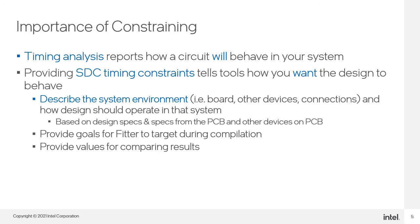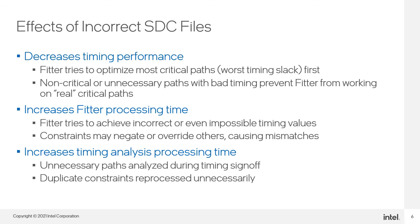Constraining your design tells the software tools your desired timing goals so that the fitter and timing analyzer can properly report back if your design can operate within the timing requirements. If your SDC file is not exactly right, or some constraints are off or missing, these incorrect or missing constraints can cause the fitter to make incorrect optimization choices and potentially spend too much time trying to reach timing closure in areas where timing is more restrictive than necessary. When the fitter works unnecessarily hard, other areas of the design will suffer as a result.